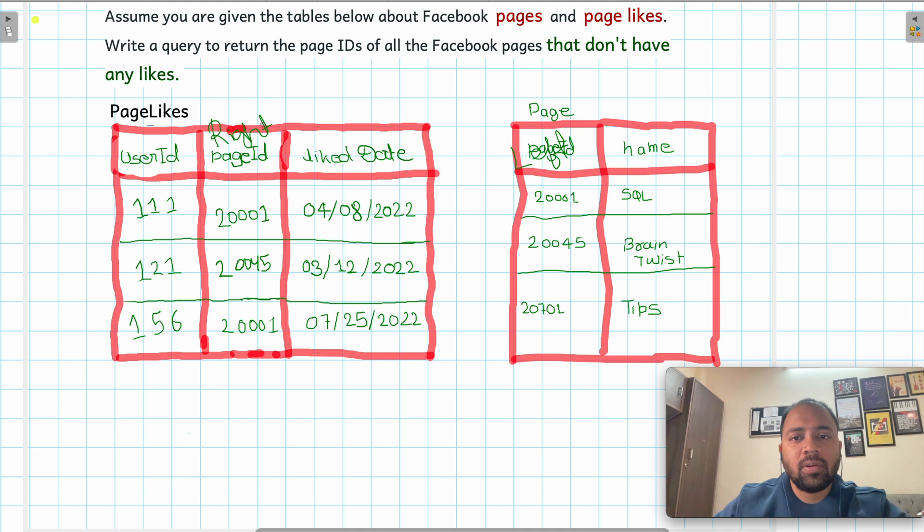This is the right table. Perfect. So if we do the join based on the page_id, then what will be our result? All the matching rows will have all the records. This 20001 will match to this, this 20001 will match to this. Perfect. This 20045 will match to this. And this 20701 does not have any matching records in the right table, so it will have null.